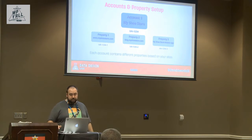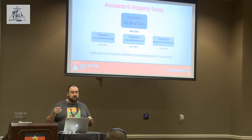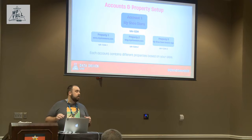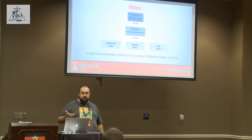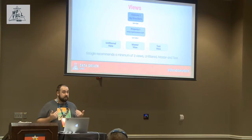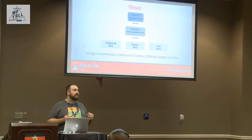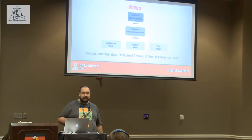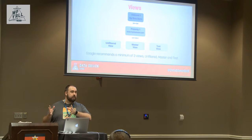To make it logical: your account might be 'My Shoe Store,' with properties like 'Blog at My Shoe Store' and 'My Shoe Store Mobile App.' Each property has its own views. Google recommends a minimum of three views, and I do too: an unfiltered view, a master view, and a test view. The master view is where you apply all filters and data manipulation. The test view is where you test filters before moving them to master.